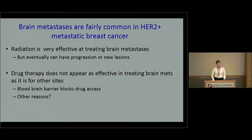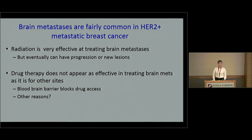Other important considerations in treating HER2-positive disease: brain metastases are fairly common. Radiation is very effective at treating brain metastases, but eventually patients can develop new brain lesions or treated lesions can grow again. Our drugs are unfortunately not as effective at treating brain metastases as they are at treating cancer in the rest of the body. The blood-brain barrier may block drugs from reaching the brain, though we're still investigating other reasons. This is a really important area of need right now.